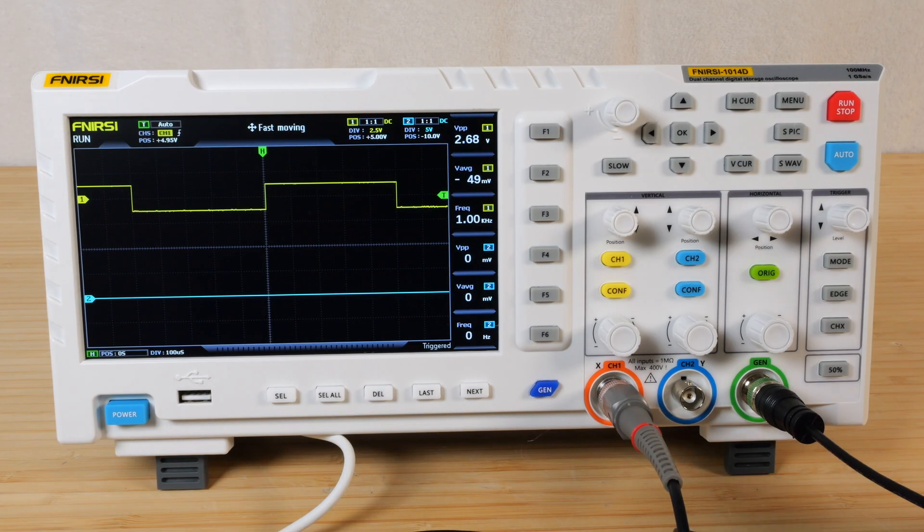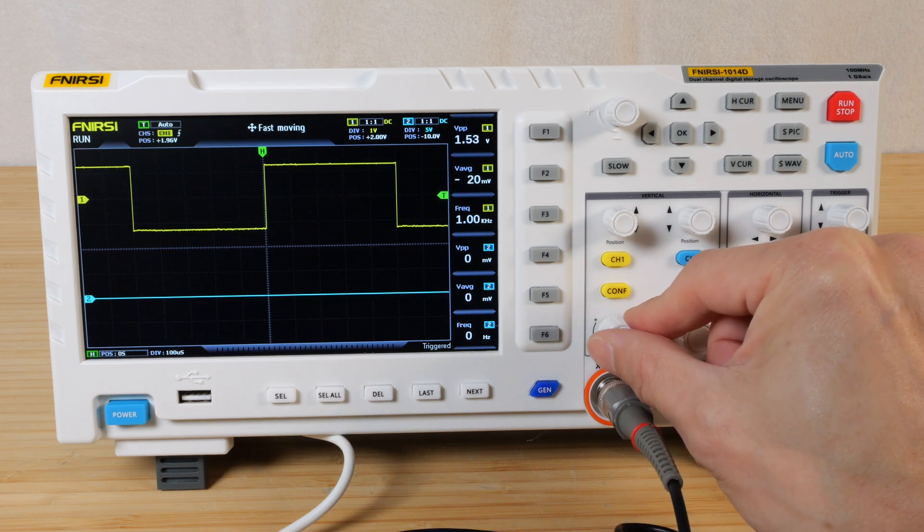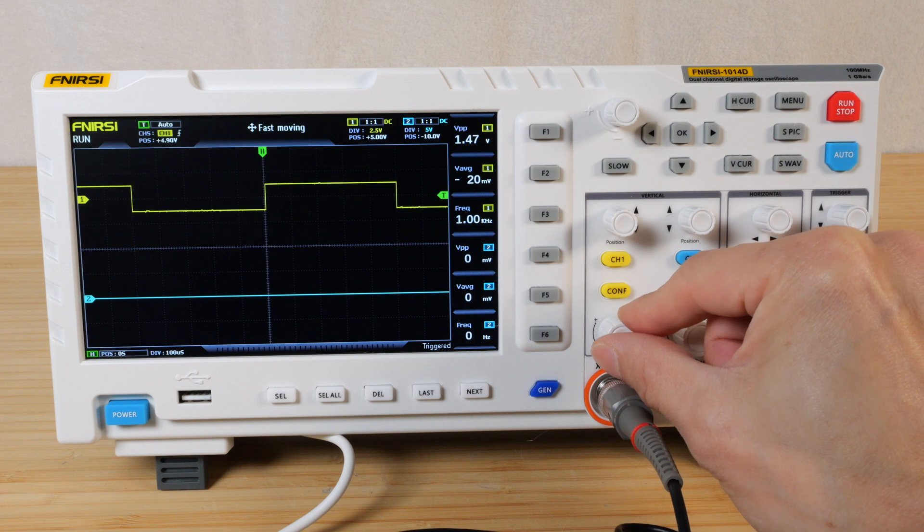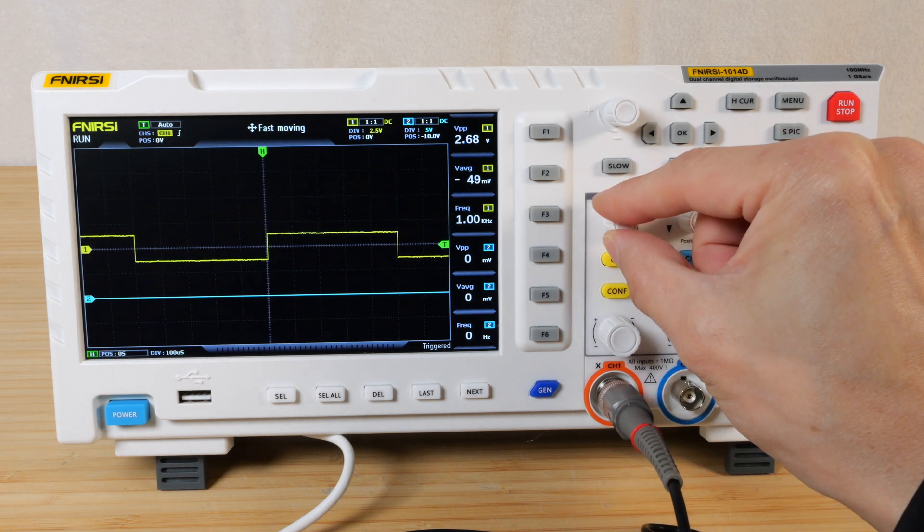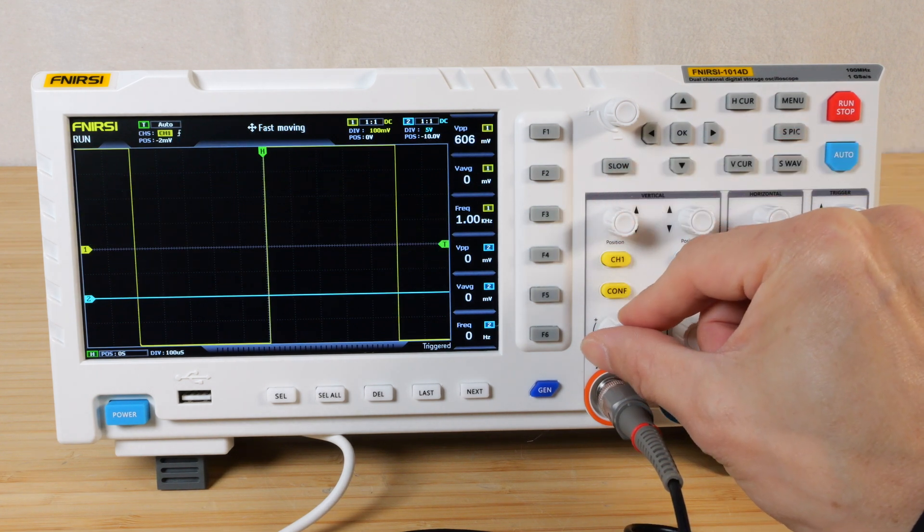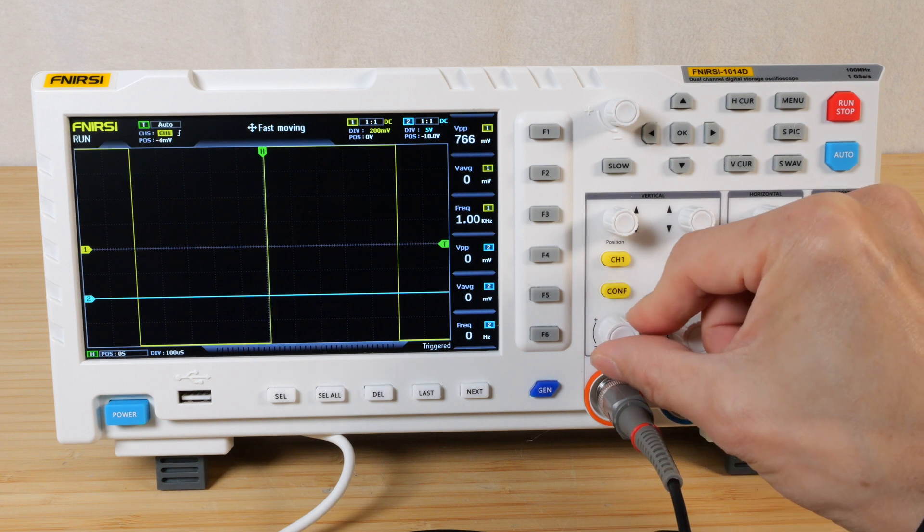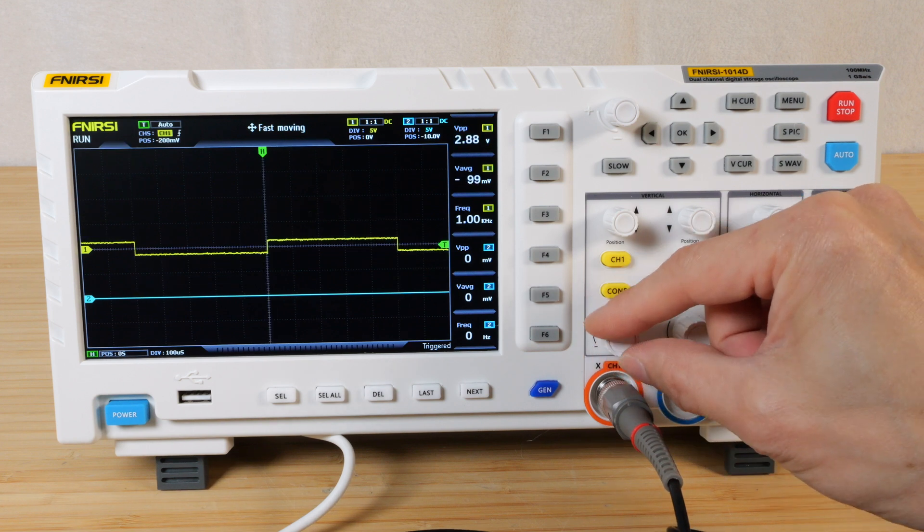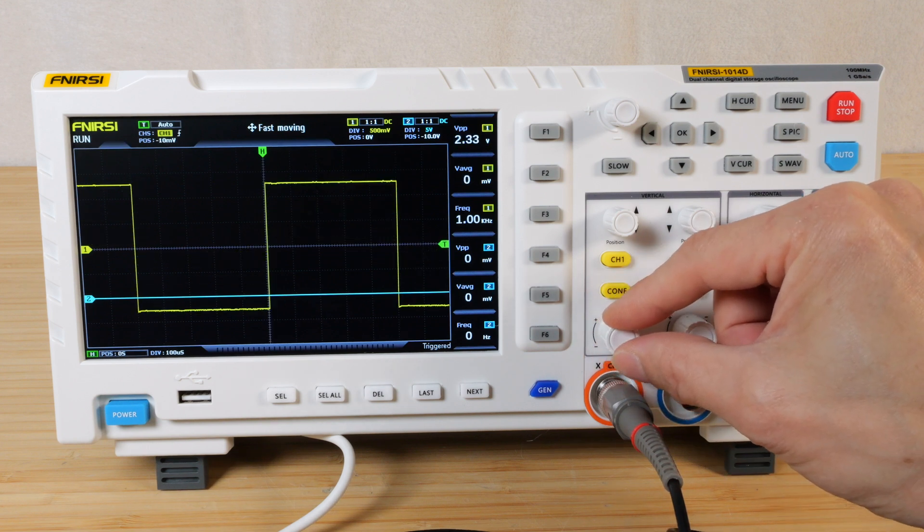I'm totally blown away at the quick response of this thing. Change the vertical division. Very snappy. Move it to the middle. Look at that. It's actually quicker than my really old Tektronix scope.